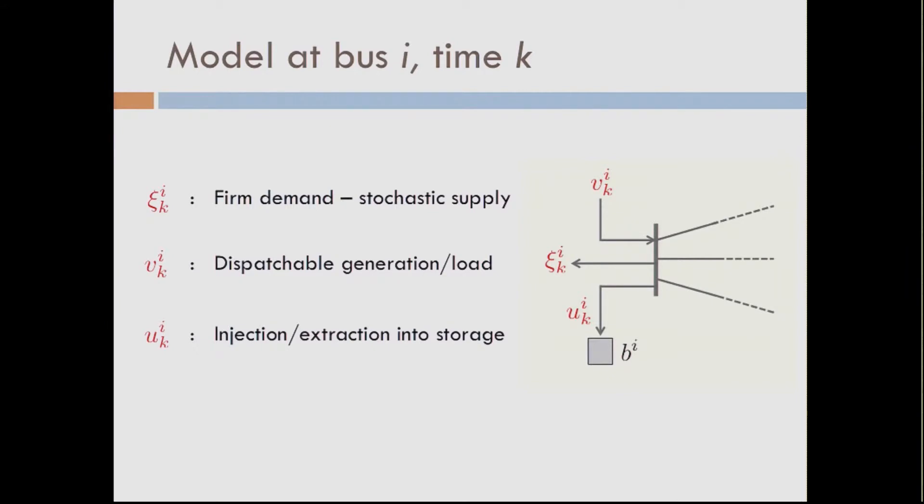Consider this very simple model, where we have at a bus i, we have three things going on. One is cik, where the superscript i is the bus number, k is the time. Time is discretized in this model. What is cik? It is any net firm demand minus any stochastic supply. Essentially, we call it the net demand. This is the stochastic quantity in the system. So think of if you have a wind generator or solar PV output, negative of that output is essentially this. Now, the system operator has also access to some dispatchable generation or load resource at every node. Essentially, the idea is that if vik is positive, it's generation. If it's negative, it's a dispatchable load. And then uik is what you inject or extract from the storage. Of course, there is some storage capacity, so we assume some linear dynamics of the storage systems.